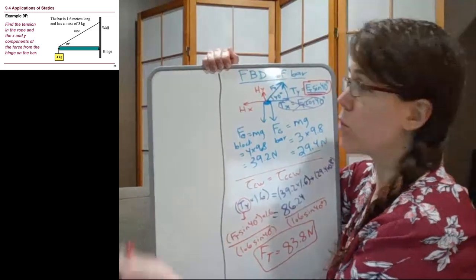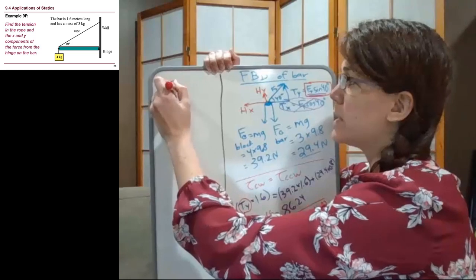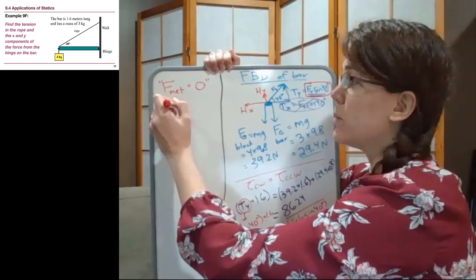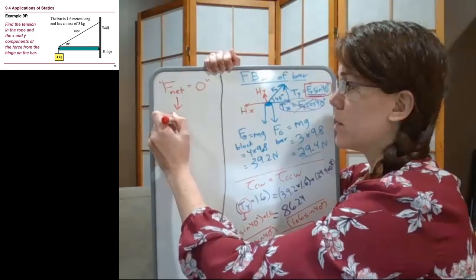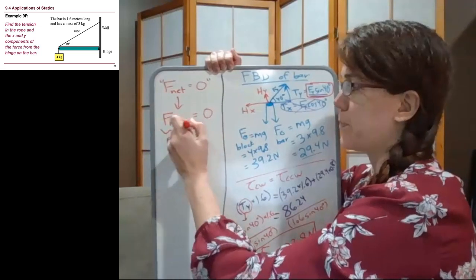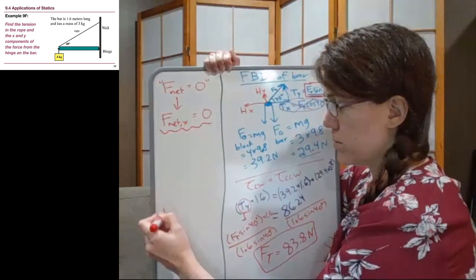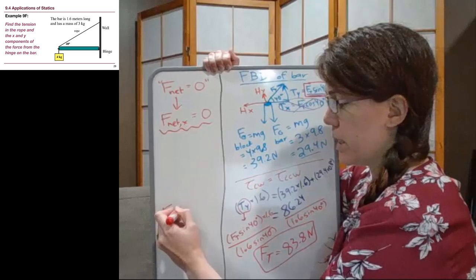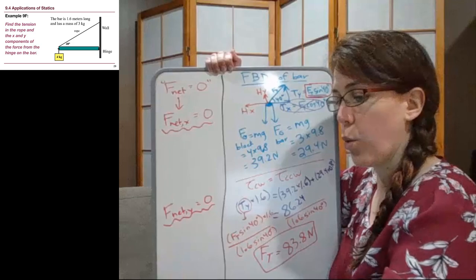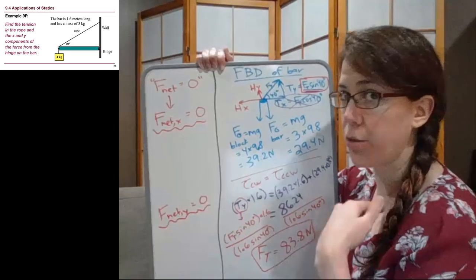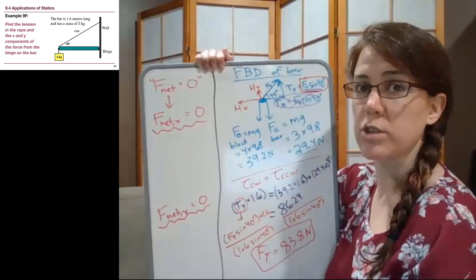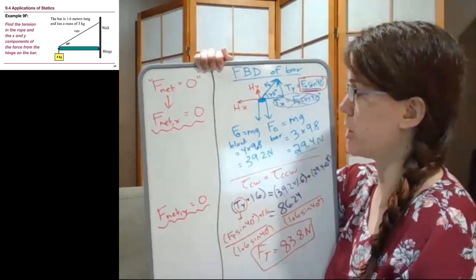So this is important here. This is the first time and not the only time where when we think of this big idea of f net equals zero, what that really means is that we have f net in the x direction, the total forces in the x direction equals zero, and the net forces in the y direction equals zero. We did x and y forces separately all throughout chapters 4 and 5, and so this isn't new to us. It's just the first time that we've done it in an example problem in chapter 9.